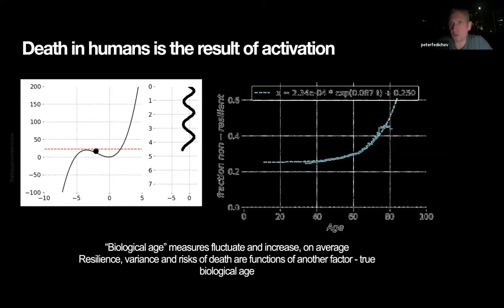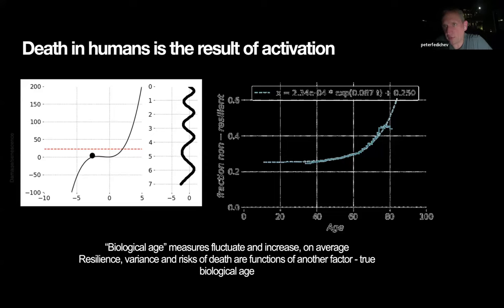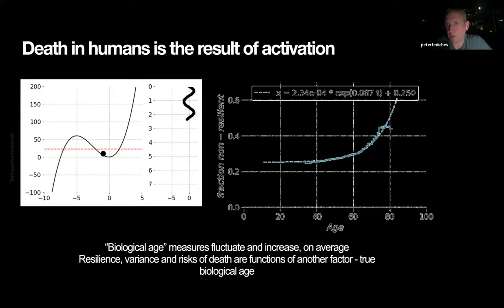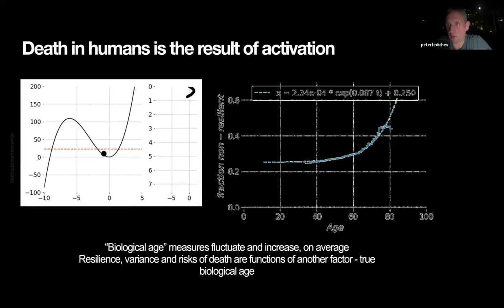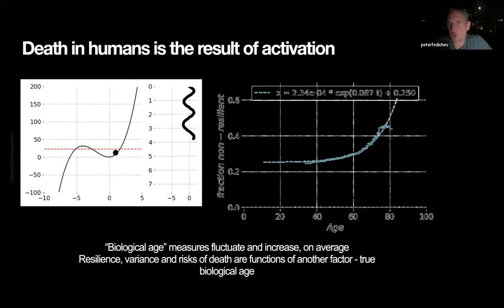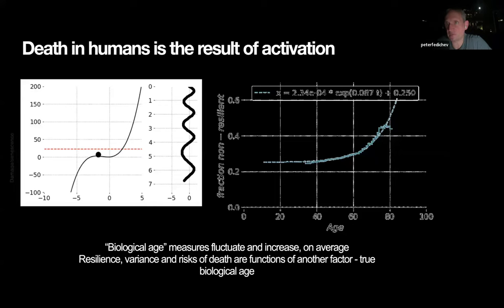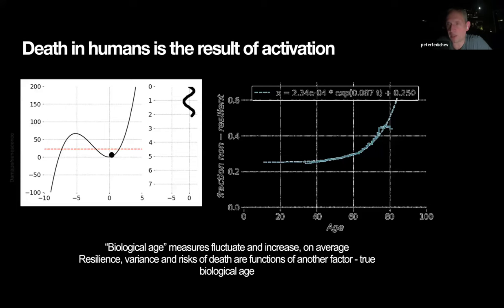This coupling between regulatory potentials of dynamically stable modes in humans with something else that ages linearly is the mechanism generating exponential mortality and morbidity in humans. On the right, from wearable devices collected via the Gero Sense app — which has zero user value but collects data from people happy to help aging research — we measured the fraction of people having long autocorrelation times, meaning they cannot recover quickly. The fraction having an autocorrelation time larger than six months is going up exponentially with age.